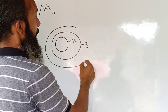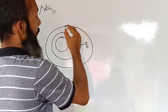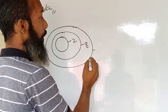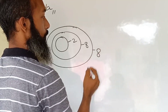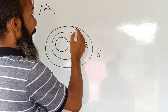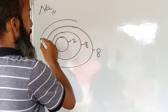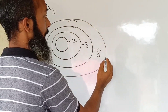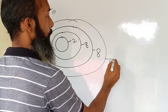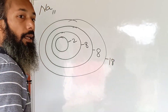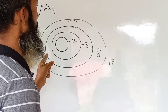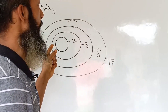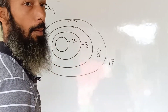The third shell is known as the M-shell; it also has the capacity to occupy eight electrons. The fourth shell is called the N-shell; it has the capacity to occupy 18 electrons. Based on these energy levels, we have to find out the valency of sodium.